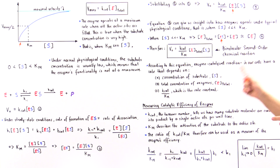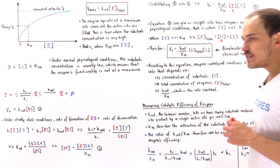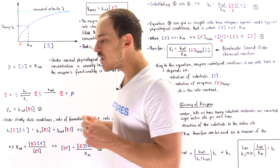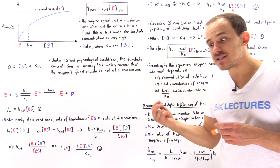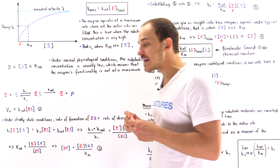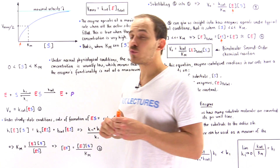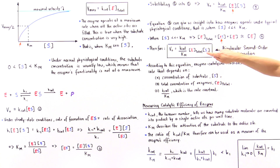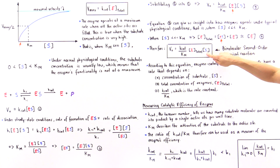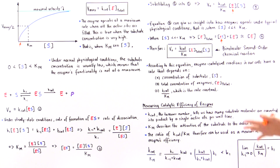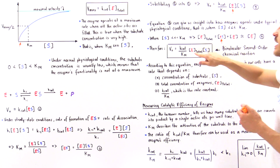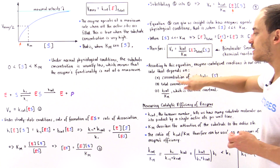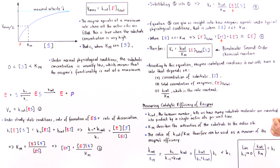According to this equation, enzyme-catalyzed reactions taking place inside our cells have a rate that depends on three different things: number one, the concentration of the substrate; number two, the concentration of the enzyme; and number three, the rate constant Kcat divided by Km.